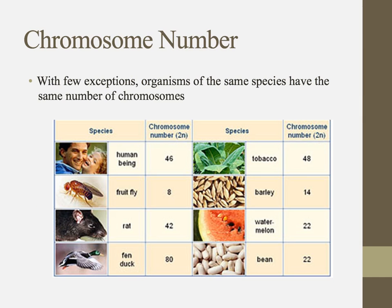I keep referencing humans and saying that our chromosome number is 46. That's because chromosome number is one of the defining characteristics of a species. With few genetic abnormalities, all humans are going to have 46 chromosomes. All rats have 42, all fenduks have 80, all watermelons have 22. So that chromosome number is one of those consistent defining characteristics of each type of organism.